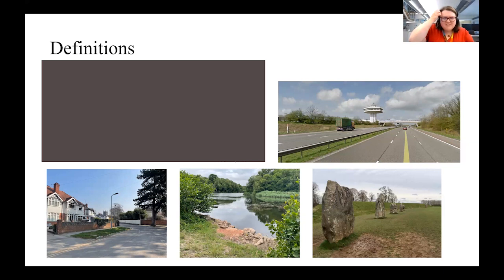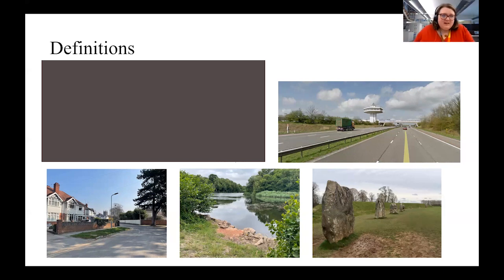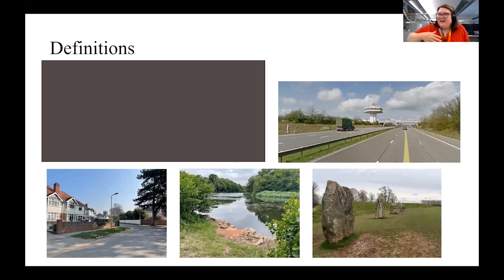We've got somewhere we might obviously think of as a historic environment place — Avebury, which has standing stones. But even there, what we've got is this Neolithic monument in a field that's been farmed to the present day, with sheep farming and a village literally in the centre of the stone circle. All of these things layer together. I also threw in my favourite service station on the M6 to indicate that heritage is not just the really old stuff — it can be quite modern structures. Something like a motorway could be considered a historic landscape, or at least a component of one.